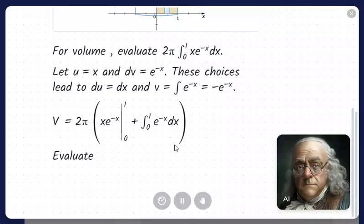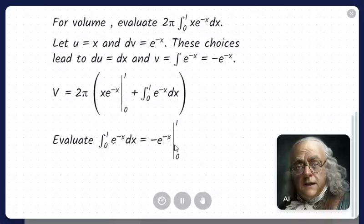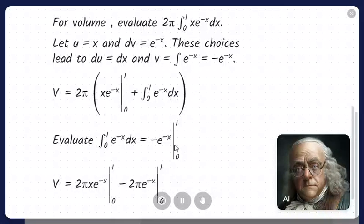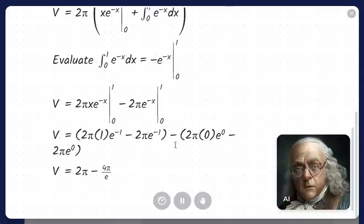Evaluate the integral in the second term. Now, substitute back into the volume expression. Substitute. Simplify, we get 2π minus 4π over e.